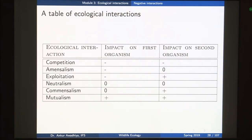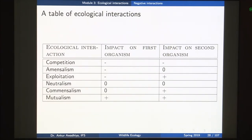The second one is amensalism. In the case of amensalism, one organism is harmed and the second organism does not suffer a benefit or a harm. So this is a negative interaction because at least one party is getting a harm, and we will also look at amensalism today. The third one is exploitation. In the case of exploitation, you have a harm to the first organism and a benefit to the second organism, so we call it a negative or inharmonious interaction. We will look at exploitation today and various forms such as predation, parasitism and so on.